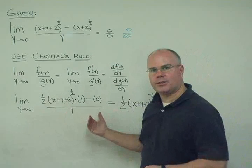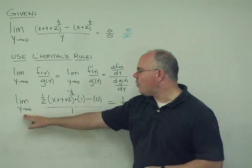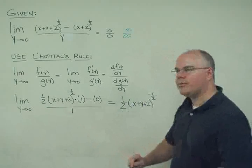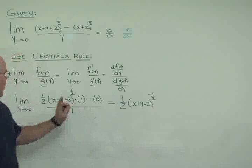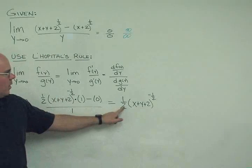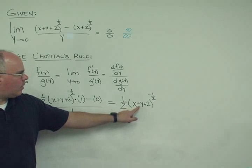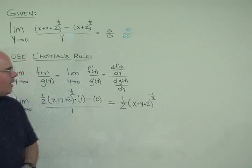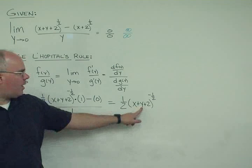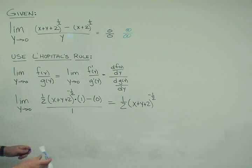Now if we go ahead and collect terms and substitute y as it goes to zero, we get the following. That the limit is equal to one-half times (x+y+2)^(-1/2), and so as y goes to zero, this becomes the following.